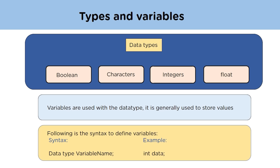The integer data type is used for integer values; they can be both positive and negative. Next is the float data type — float is used when we want to store values that are in decimal form. Variables are used with these data types to store values. The syntax to define a variable is: first mention the data type, then the variable name of your choice. For example, int is the data type and 'data' is the variable name.